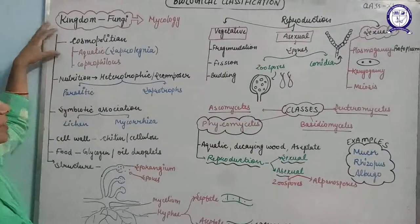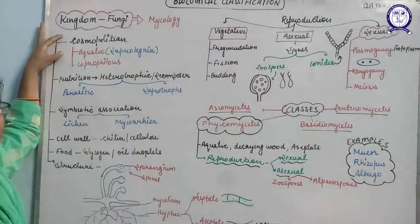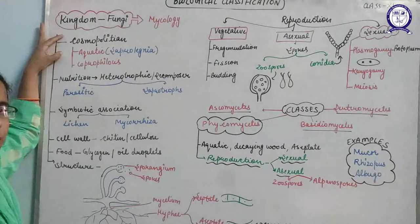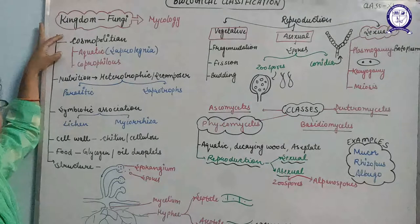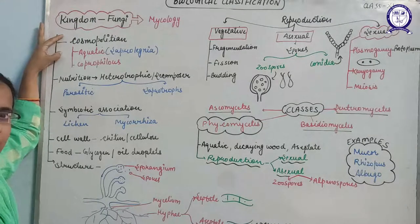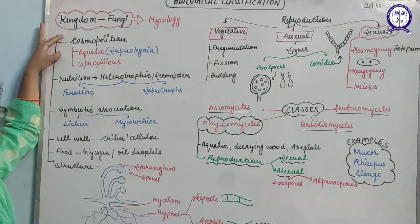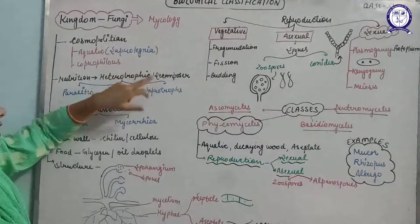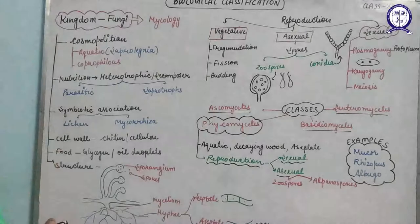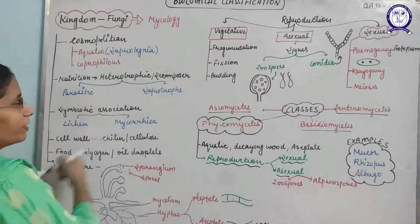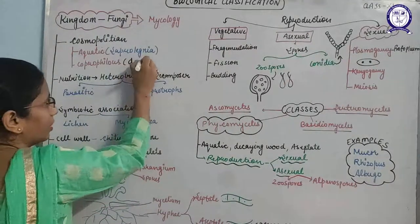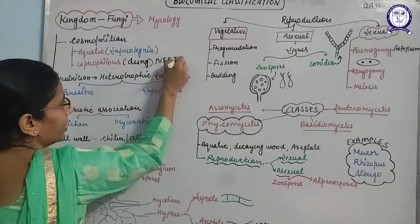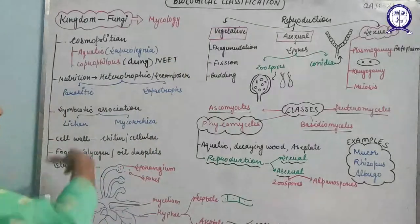Today we are going to discuss the fungus. The first main characteristic is that it is cosmopolitan in nature — that means it can be found anywhere where it gets favorable conditions. It can be found in aquatic conditions also; an example is Saprolegnia. Second is coprophilous — fungus that is found on dung. This question often comes in exams: name the fungus found on dung — it is known as coprophilous.